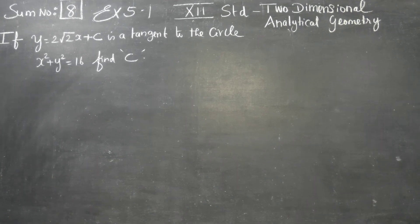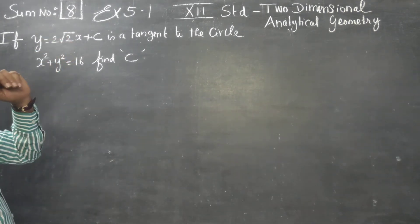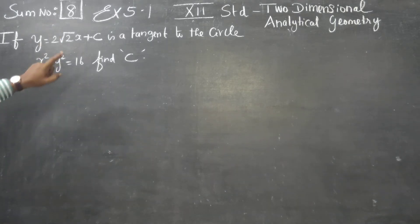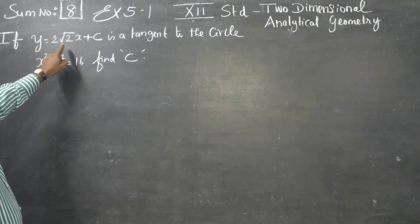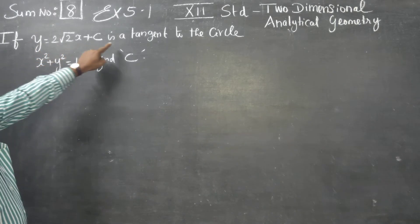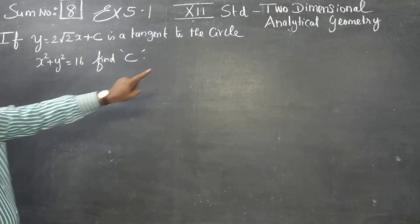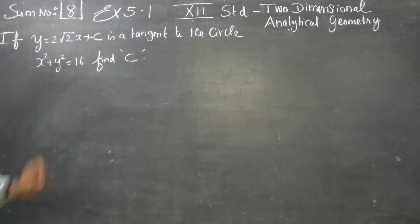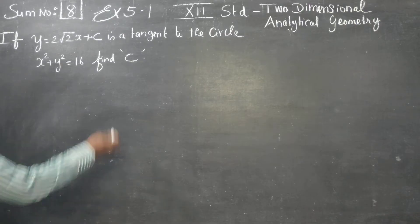Dear 12th standard students, in exercise number 5.1, sum number 8: y is equal to 2 root 2 x plus c is a tangent to a circle x square plus y square is equal to 16. Find the value of c.